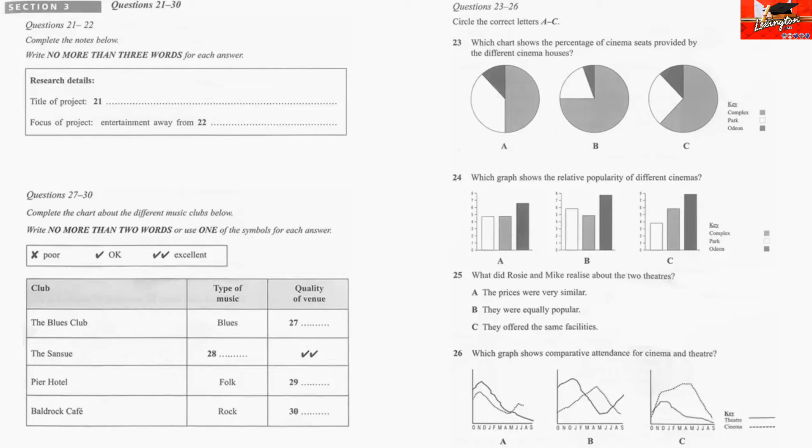And then, did you get any information from the students as to which of the clubs they preferred? That is the end of Section 3. You now have half a minute to check your answers.